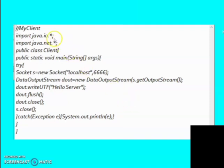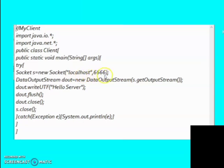Here we have imported all the classes from the .io and .net Java packages. Then we have created the class Client. Here we have made an object of the Socket class, imported from the .net package. Since we are working on the same machine, we write localhost here, then the port number, which is 6666. Then here we have used the DataOutputStream class, also imported from the .net package.